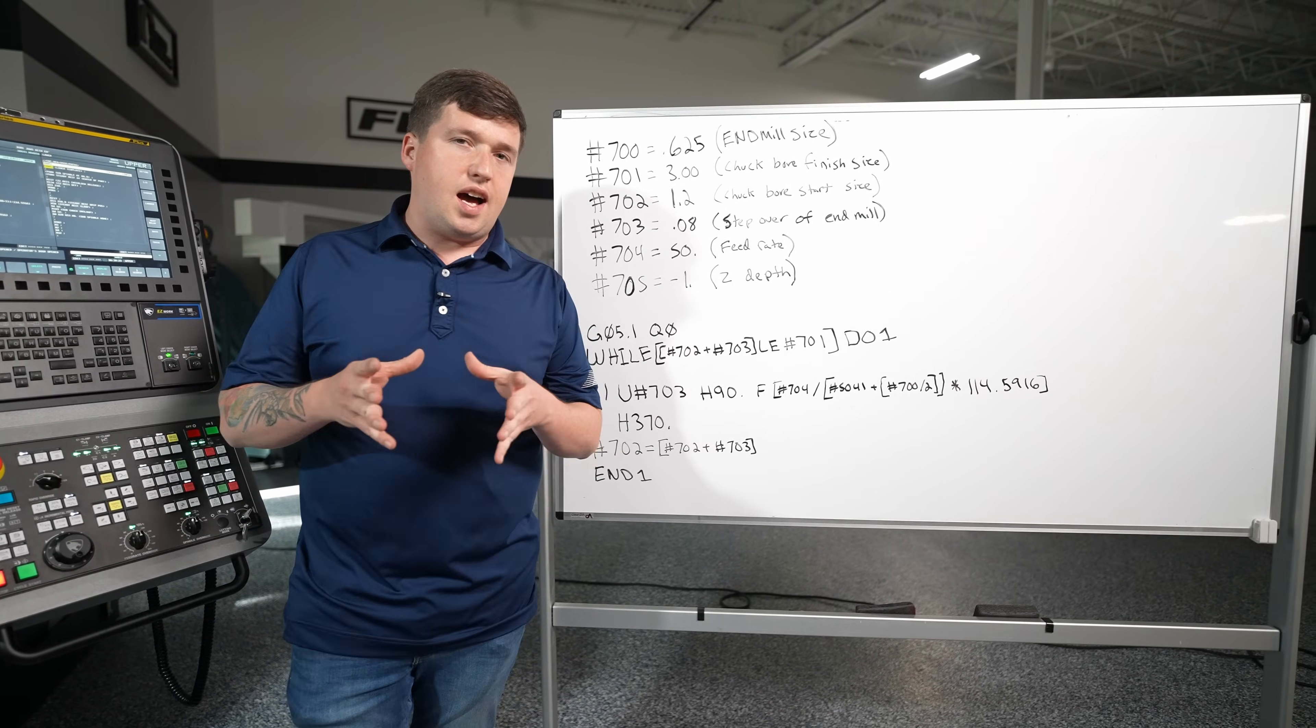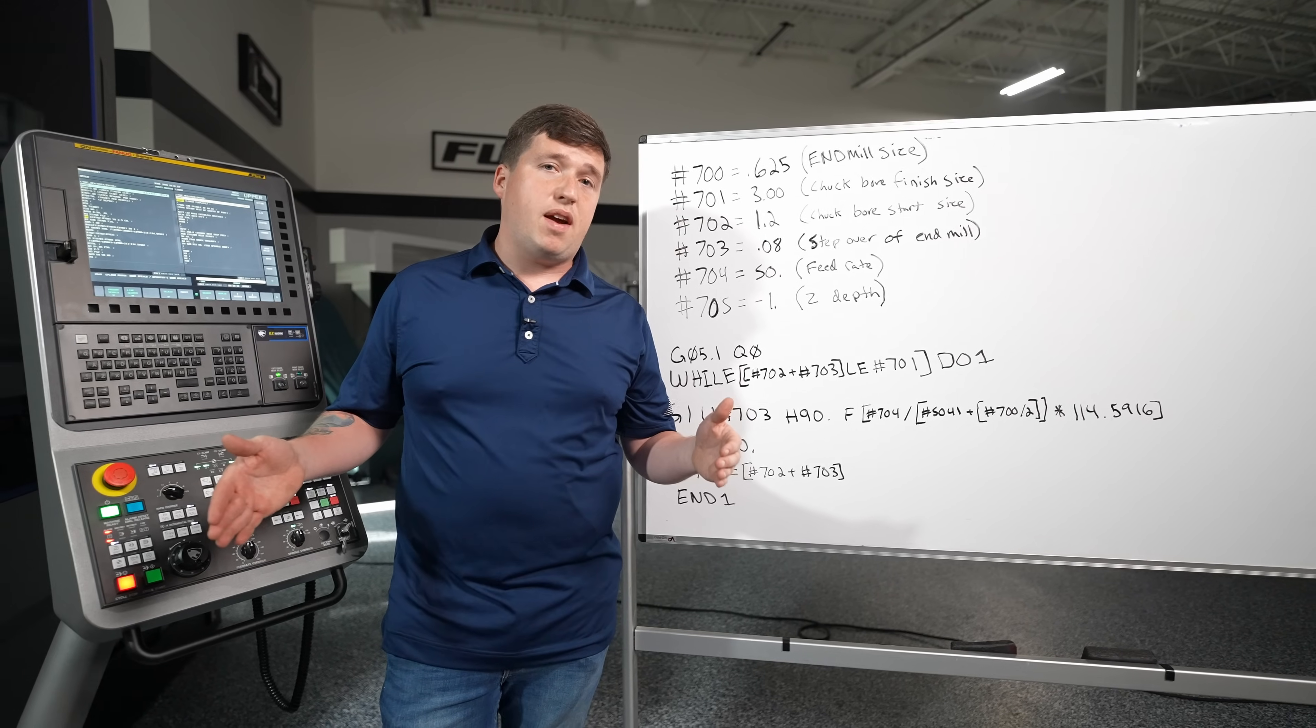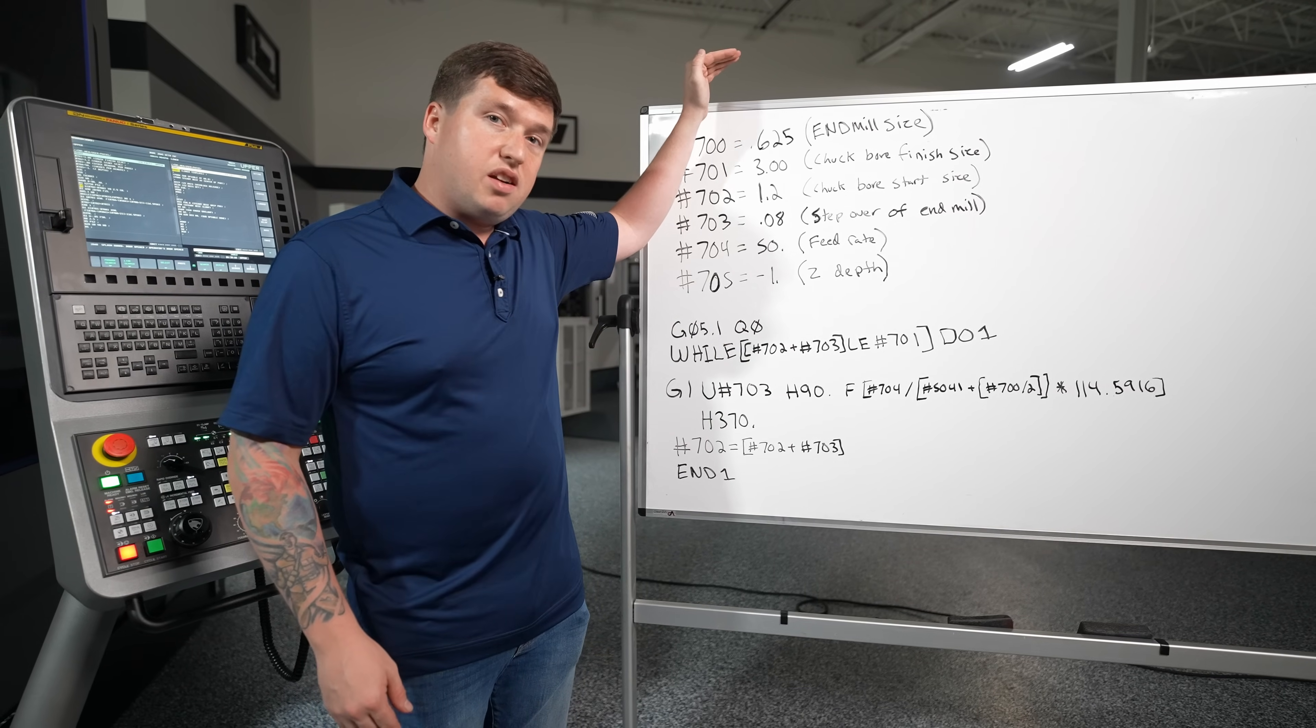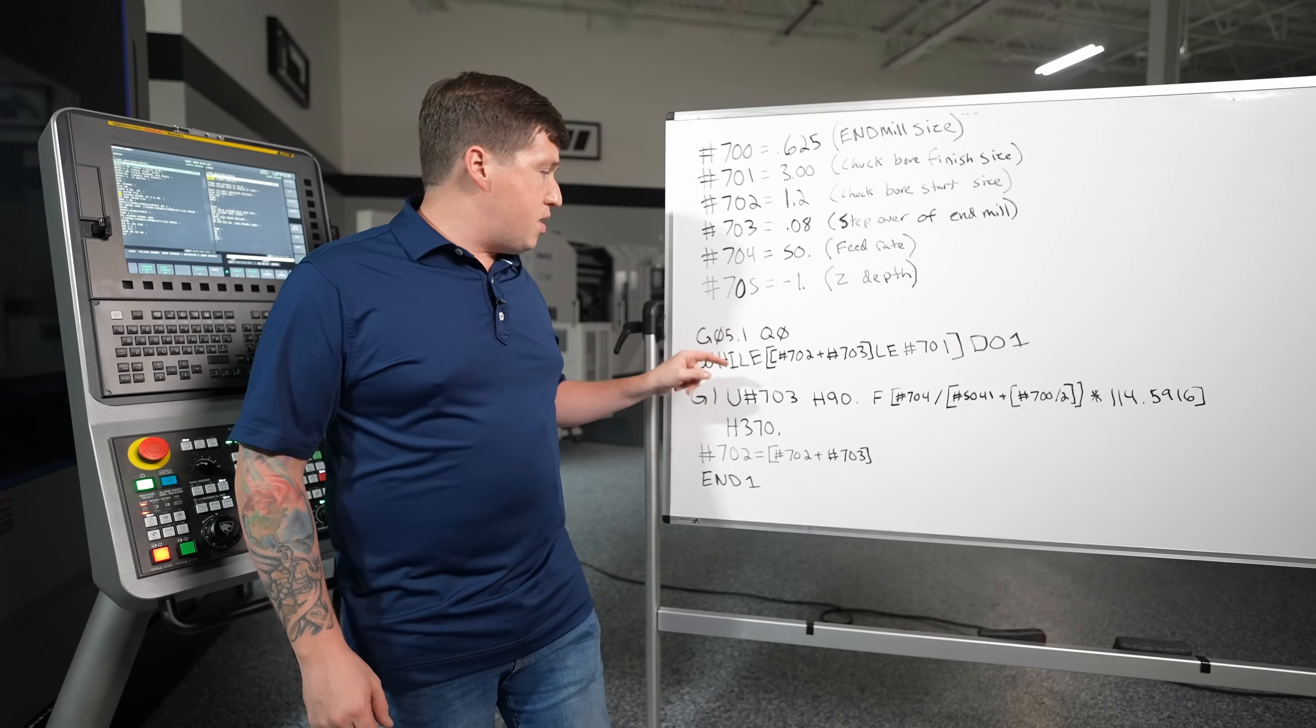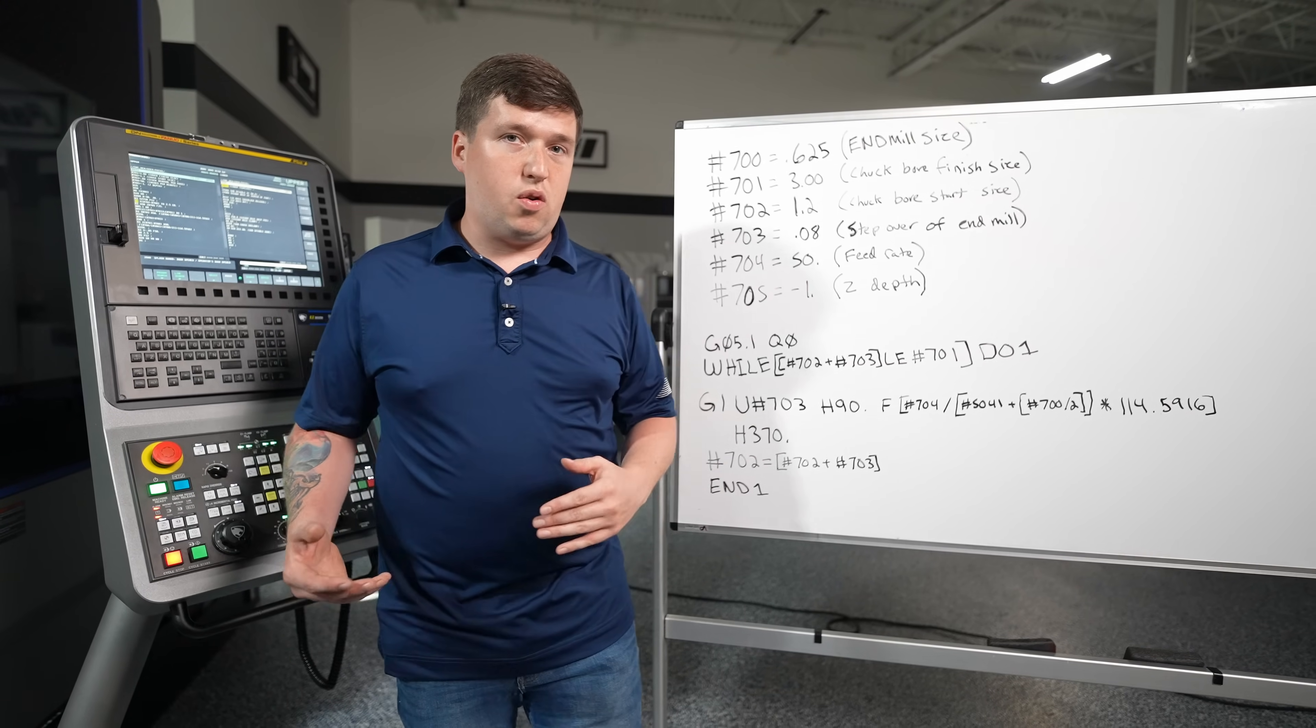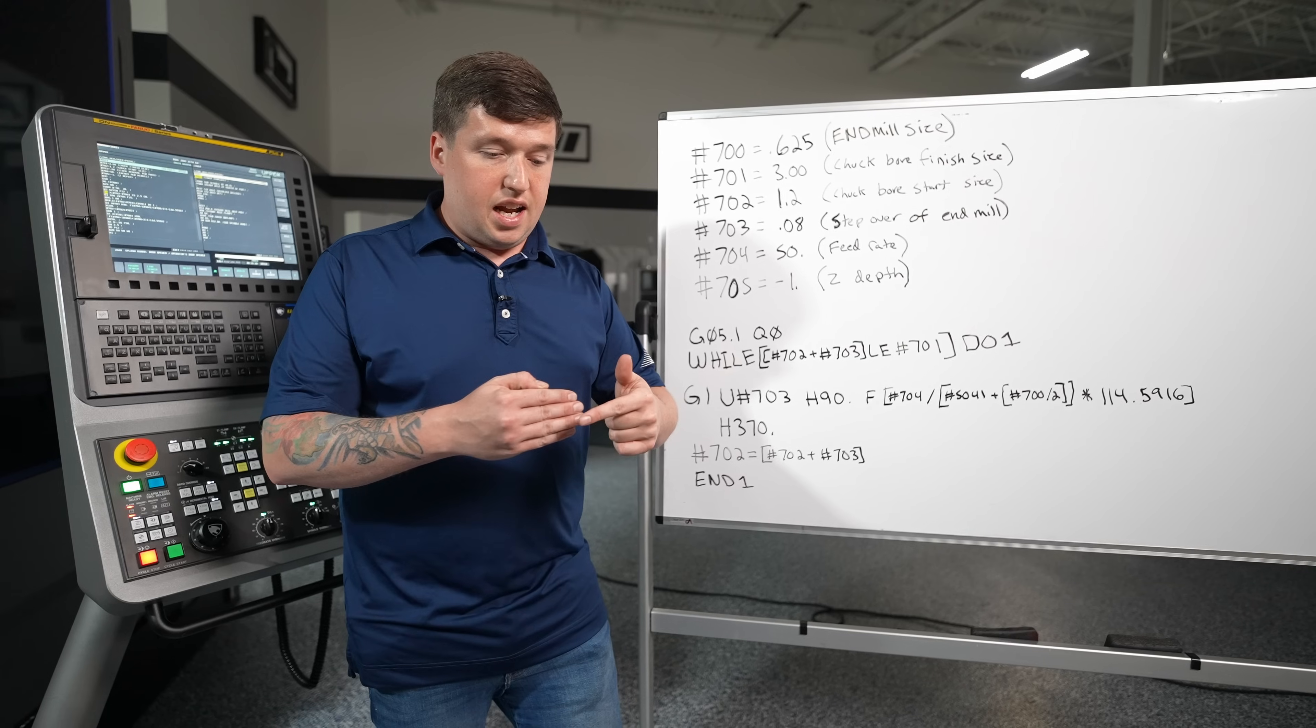So the first thing you're going to see that's an oddball code in this macro program is G5.1 Q0. Now what does this do? Well this turns off my look ahead. See these new controls they're really good at reading ahead and analyzing information. But that's a problem for when using macros. So you might get it where with how your control works it will start reading all this while it's way up here and it will put weird information in there. I know that sounds crazy but you'd be surprised. So before I jump into something like this it's very common I'll put a G5.1 Q0 in there so the machine cannot read further than this. It has to get to this position before it can continue on. So the next thing we're going to do I'm going to say while 702 plus 703 is less than or equal to 701 do one.